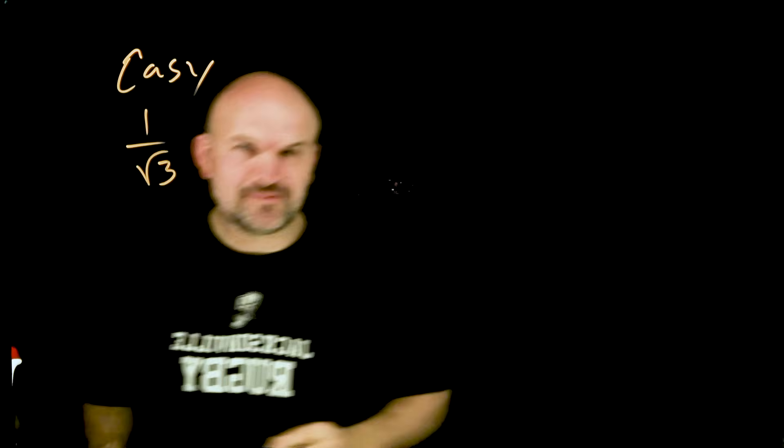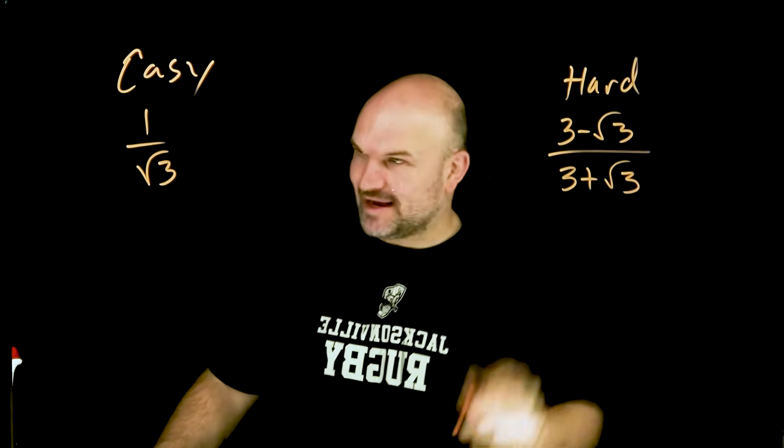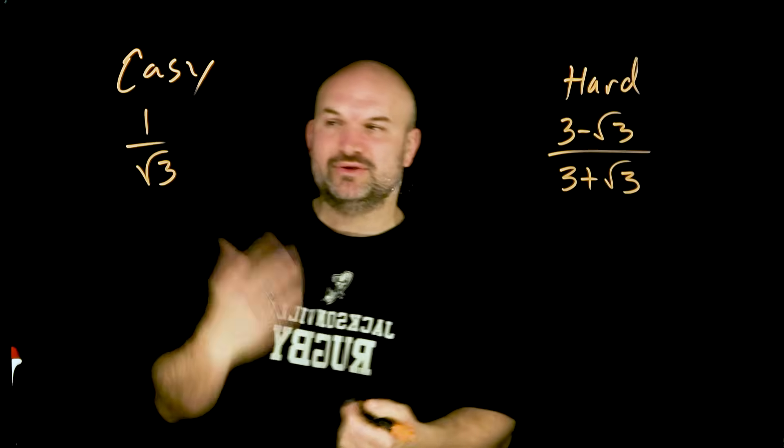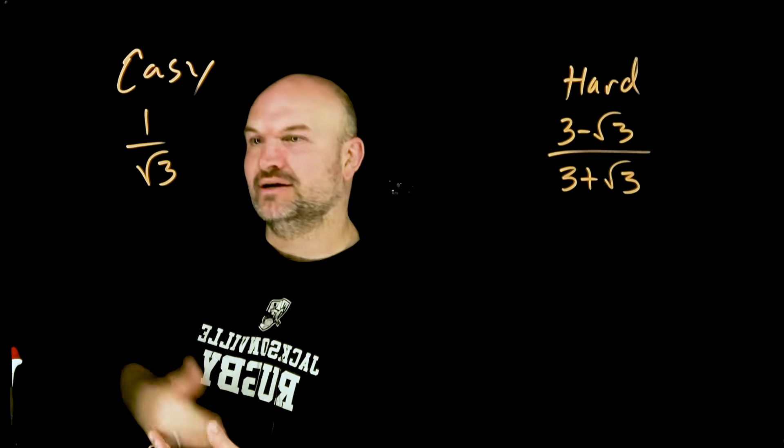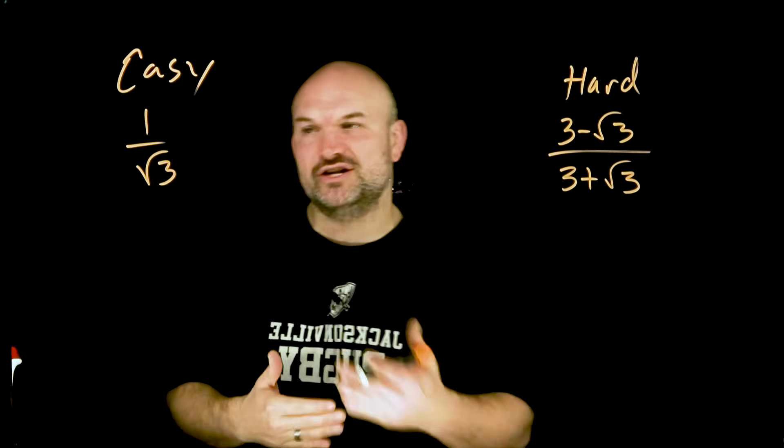Let's talk about rationalizing the denominator by going over an easy example as well as a hard example. When we're rationalizing the denominator, our main goal here with dealing with radicals is to get the radical off the denominator. A lot of times, especially in trig, we like to have it rewritten in a certain format.